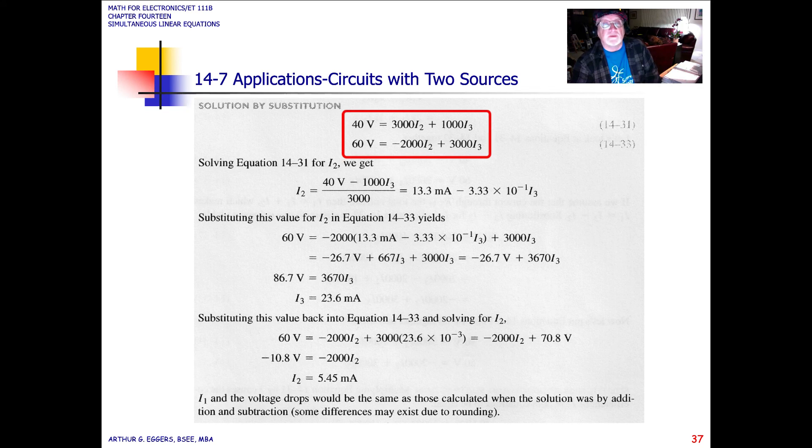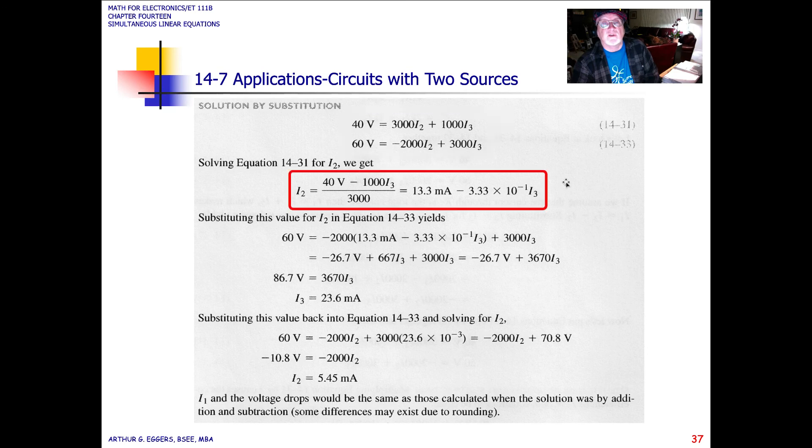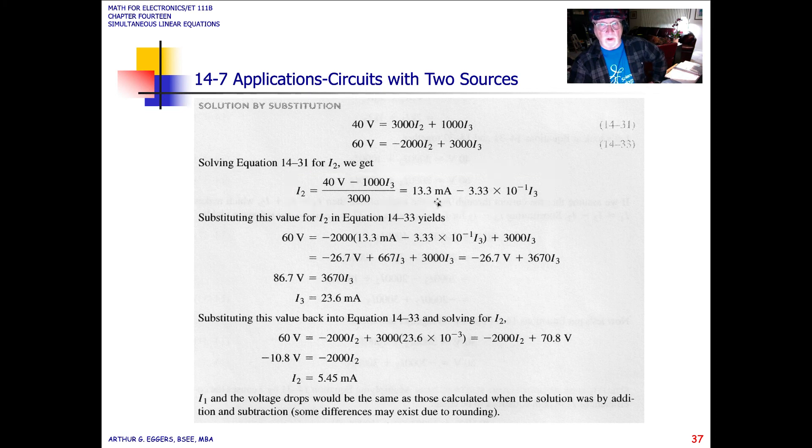So with the first expression, we're going to solve for I2 by isolating I2 in the circuit. So I2 then becomes equal to 40 volts minus 1000 I3 divided by 3000 when we rearrange the terms and multiply through. So we get 13.3 milliamps when we divide 3000 into 40, and we're going to subtract 3.33 times 10 to the minus 1 I3 when we multiply through with 3000 into 1000, one third.